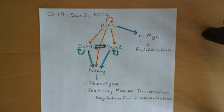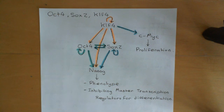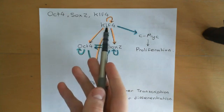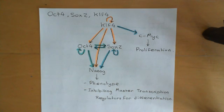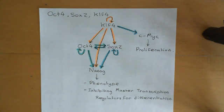We then wanted to look at what the master transcription regulators were for the pluripotent state. In embryonic stem cells — cells derived from inner cell mass cells — there are three master transcription regulators: KLF4, OCT4, and SOX2. There is a network that maintains the expression of these three master transcription regulators, and we also talked about a few downstream transcription regulators.